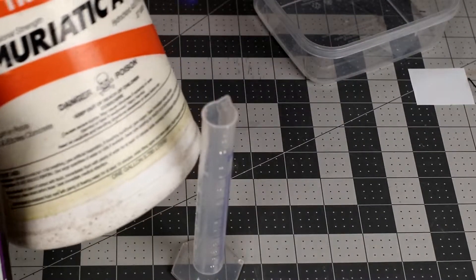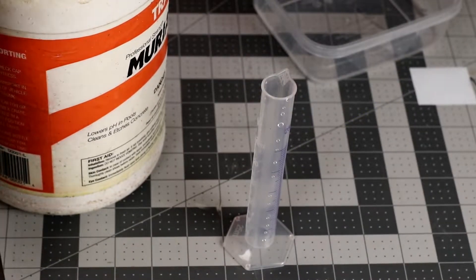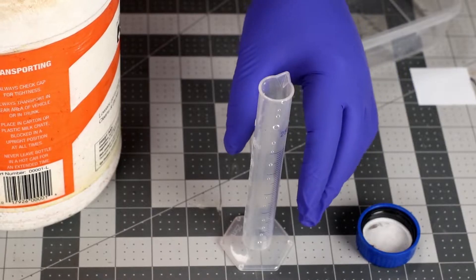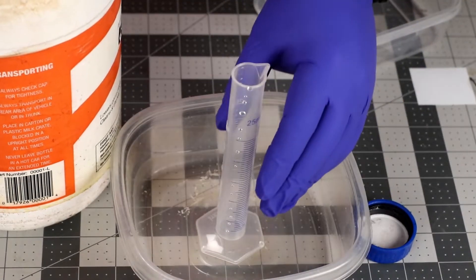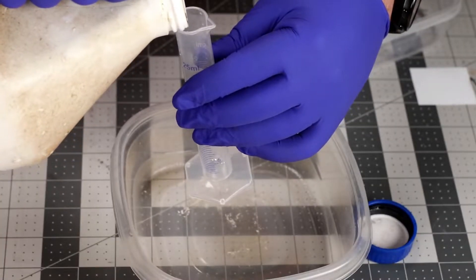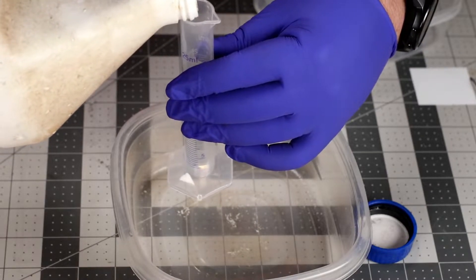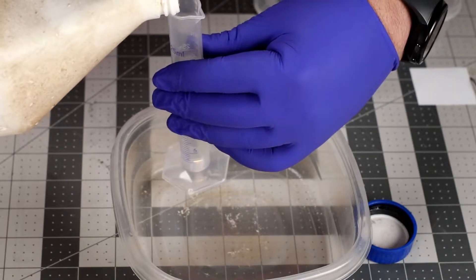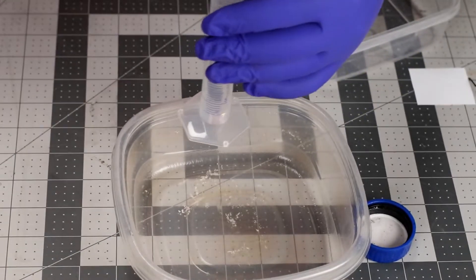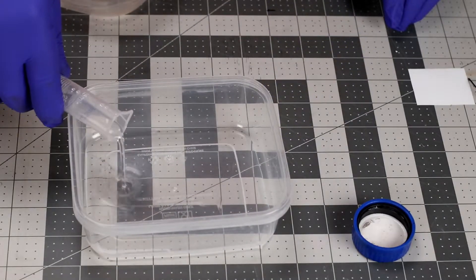Now remember muriatic acid is some gnarly stuff. If you get it on your skin wash it off immediately with water. Don't fiddle around or anything like that. Just do it absolutely as soon as you can. I'll pour this into my peroxide nice and easy.